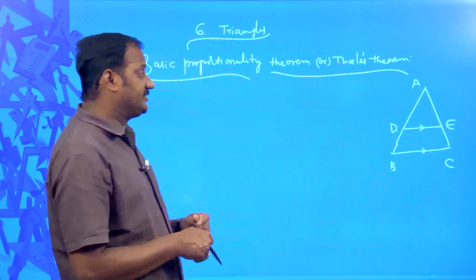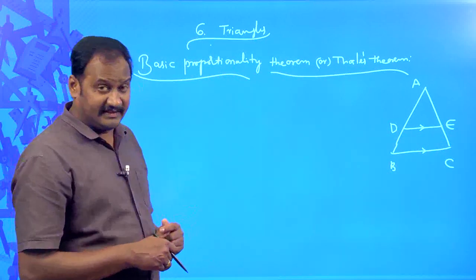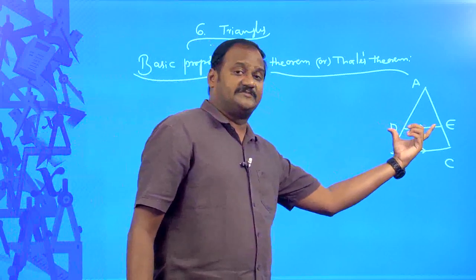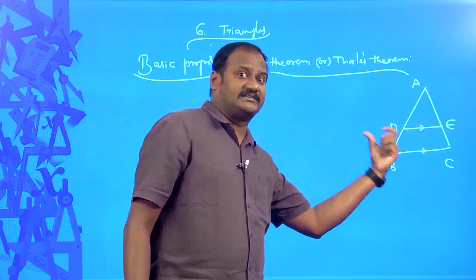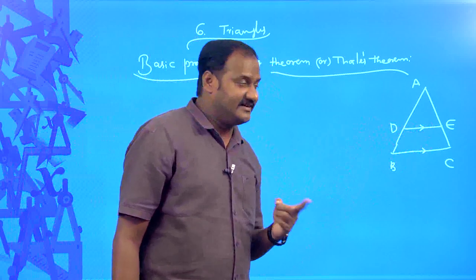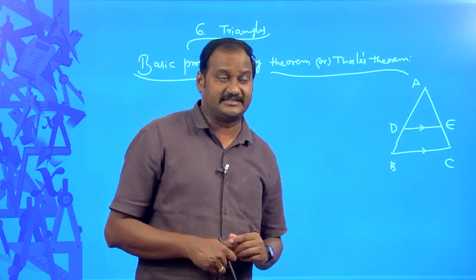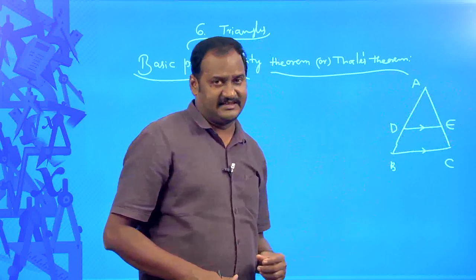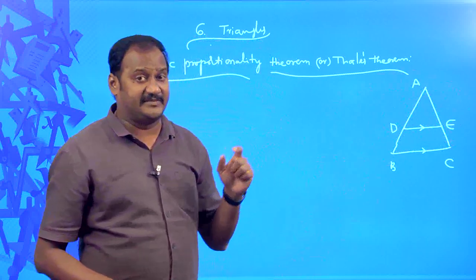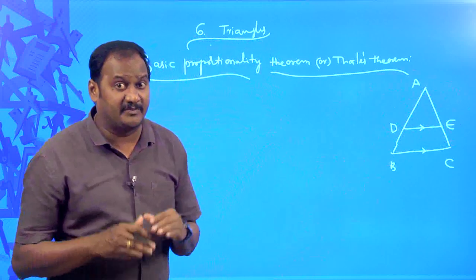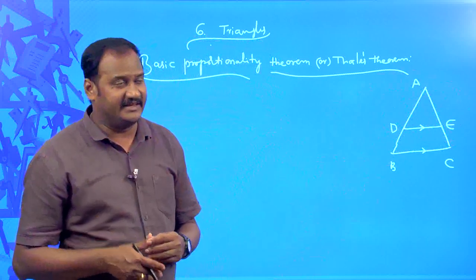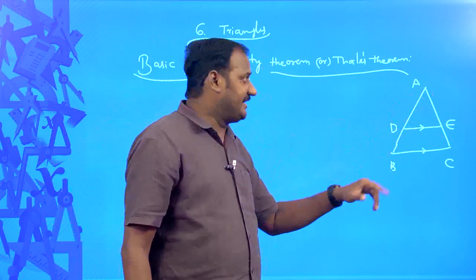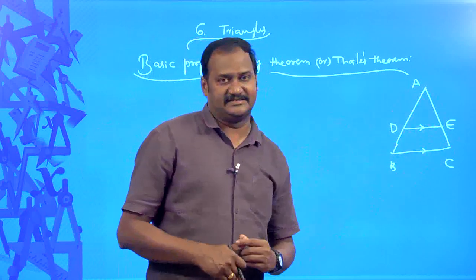What is the theorem all about? The theorem says that if you draw a line which is parallel to one side of a triangle, then it divides the other two sides — AB and AC — proportionally, meaning AD/DB is the same as AE/EC.